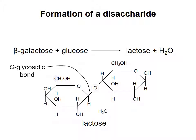We name the linkage between two monosaccharides as follows. First, we give the anomeric configuration of the monosaccharide linked via its anomeric carbon. Then we give the numbers of the two carbons involved in the linkage, usually separated by an arrow. Thus, the bond joining galactose and glucose in lactose is called a beta-1,4 linkage, because carbon-1 of galactose in the beta configuration is joined to carbon-4 of glucose.